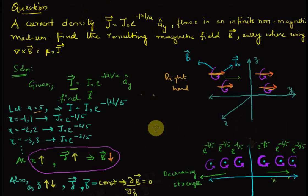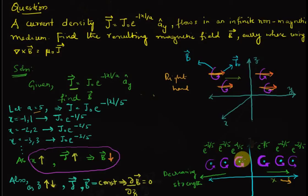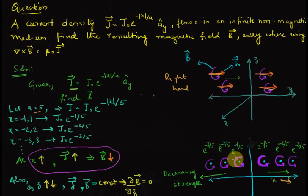The current is flowing towards the viewer, x increases along this direction, and the current density is perpendicular to the plane of the video towards the viewer. As we see, the current density decreases in value as x increases. Because current density and magnetic flux density are proportionally related, the magnetic flux density also becomes weaker as we move away in x.